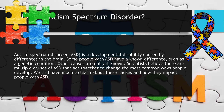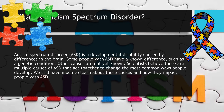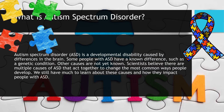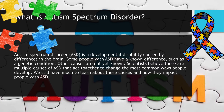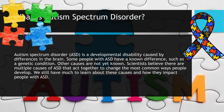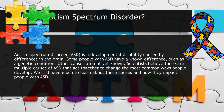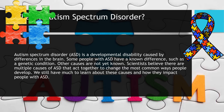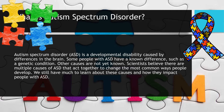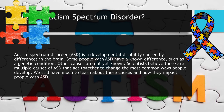Some children show ASD symptoms within the first 12 months of life. In others, symptoms may not show up until 24 months of age or later. Some children with ASD gain new skills and meet developmental milestones until around 18 to 24 months of age, and then they stop gaining new skills or lose the skills they once had. As children with ASD become adolescents and young adults, they may have difficulties developing and maintaining friendships, communicating with peers and adults, or understanding what behaviors are expected in school or on the job. They may come to the attention of healthcare providers because they also have conditions such as anxiety, depression, or attention deficit/hyperactivity disorder, which occur more often in people with ASD than in people without ASD.